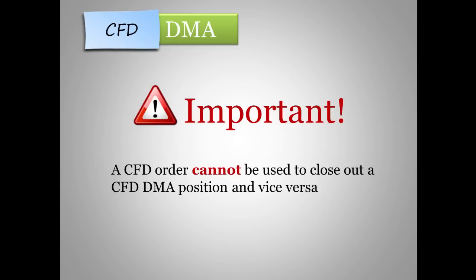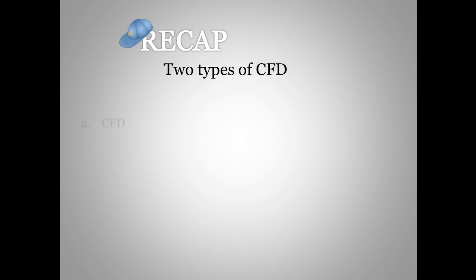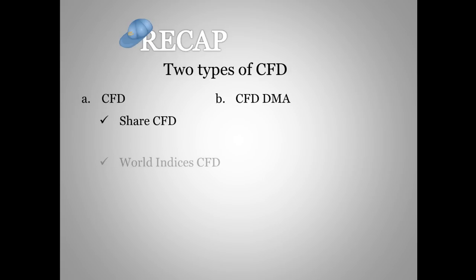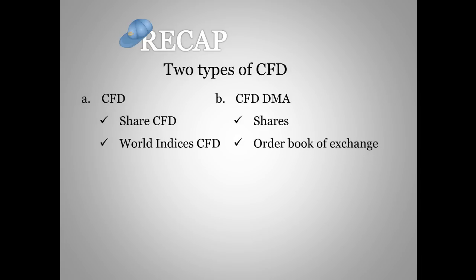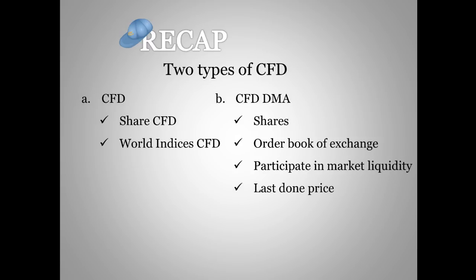Do make sure you enter your trade position correctly to prevent opening multiple positions. Let's do a quick recap on what we have learnt today. There are two types of CFDs: first, equities CFDs where you can trade both share prices as well as world indices; and next, CFD Direct Market Access or CFD DMA. With DMA, you may trade live share prices and participate in the order book of the exchange, thus allowing you to participate in market liquidity. Orders are based on last-done price. You may also participate in the pre-opening and pre-closing, and you may also submit overnight orders.